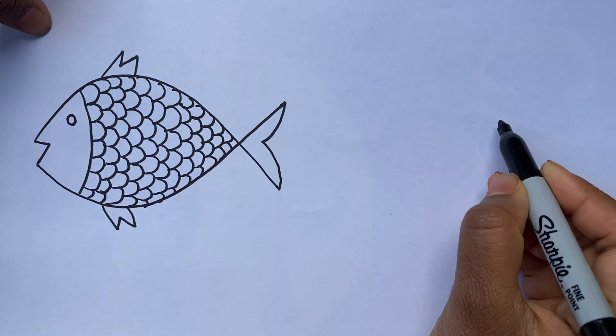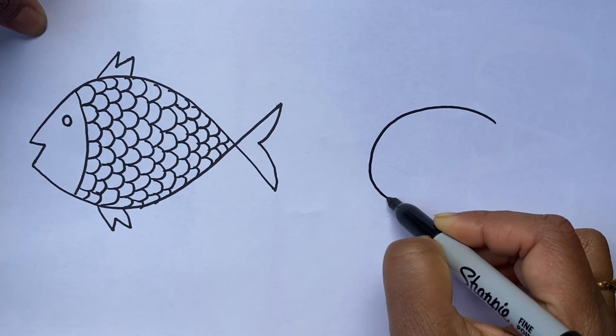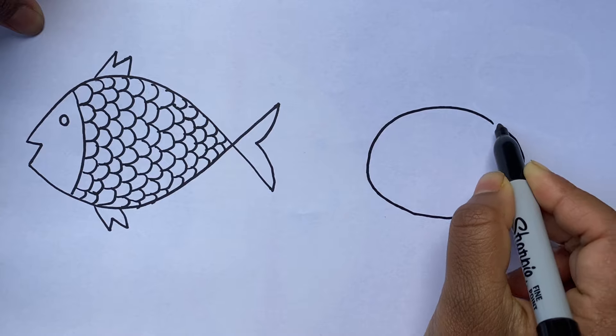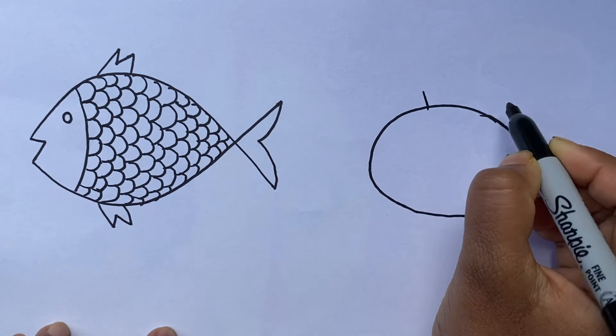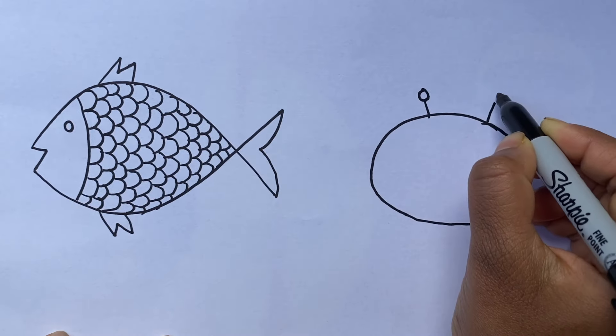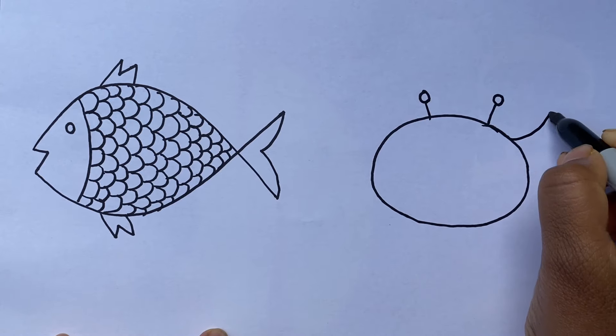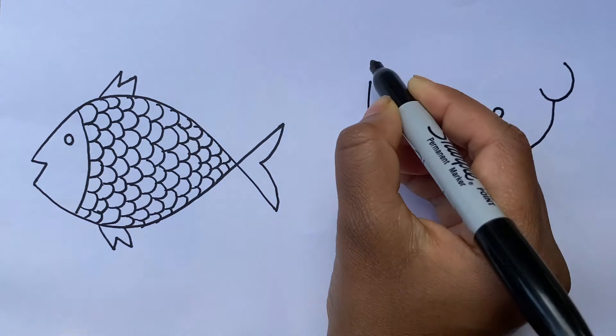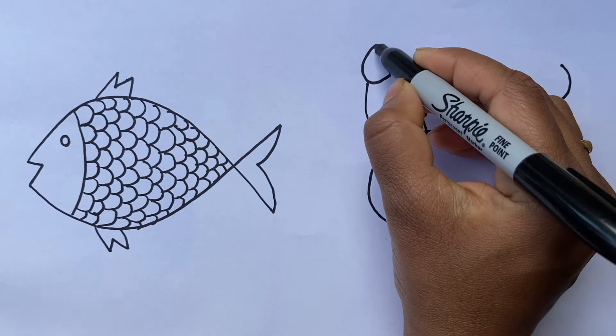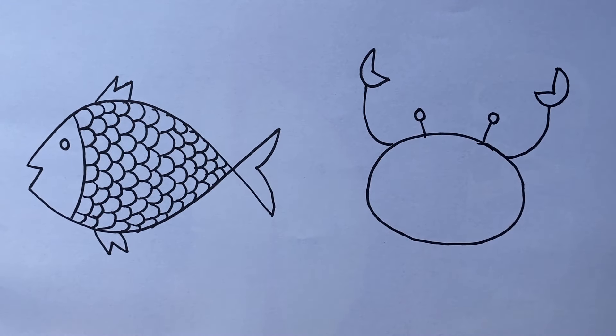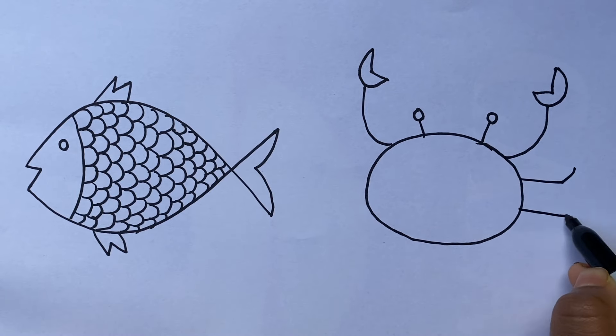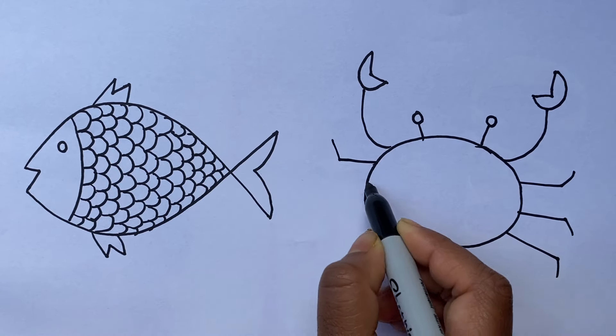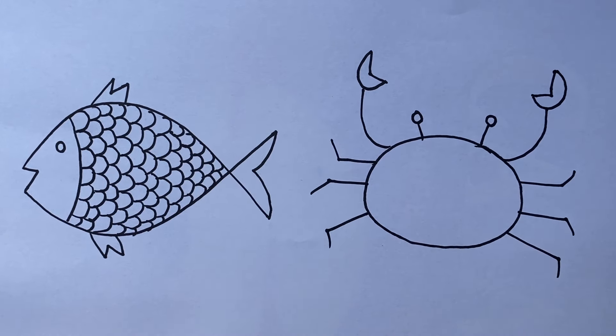Now crab. Eyes, calipers, claws, legs. Crabs walk and swim sideways.